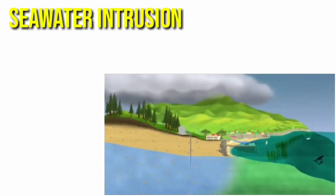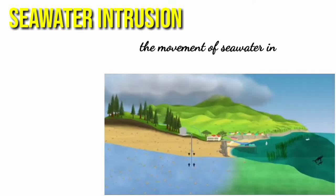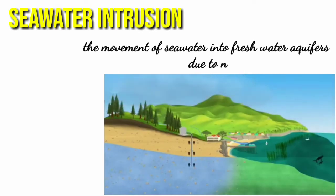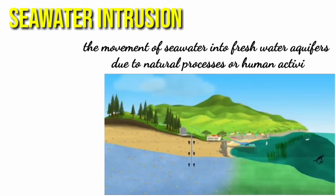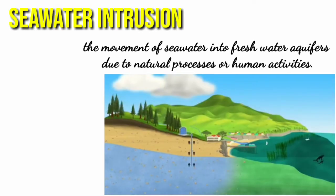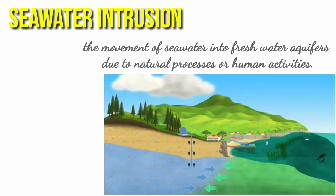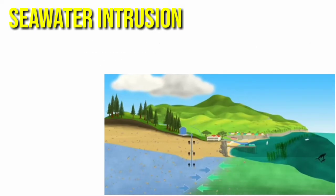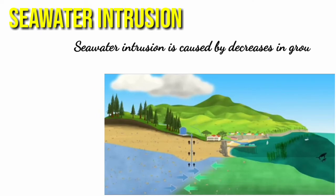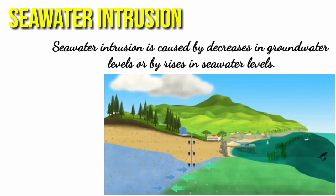Sea water intrusion is the movement of sea water into freshwater aquifers due to natural processes or human activities. Sea water intrusion is caused by the decrease in groundwater levels or by rises in sea water levels.